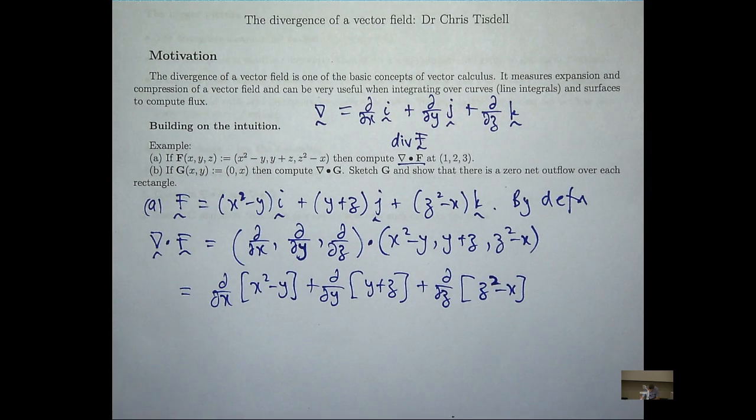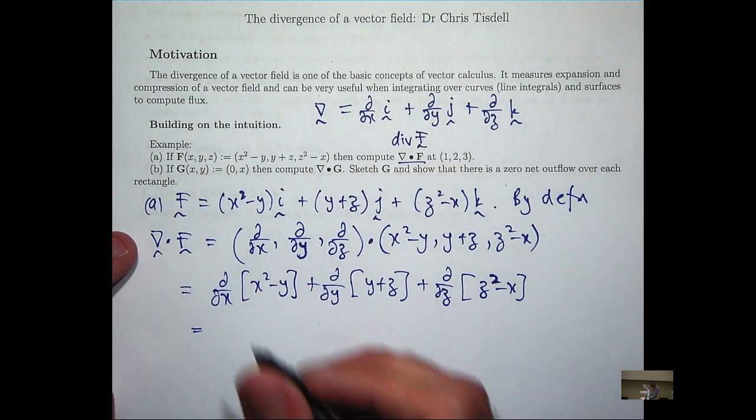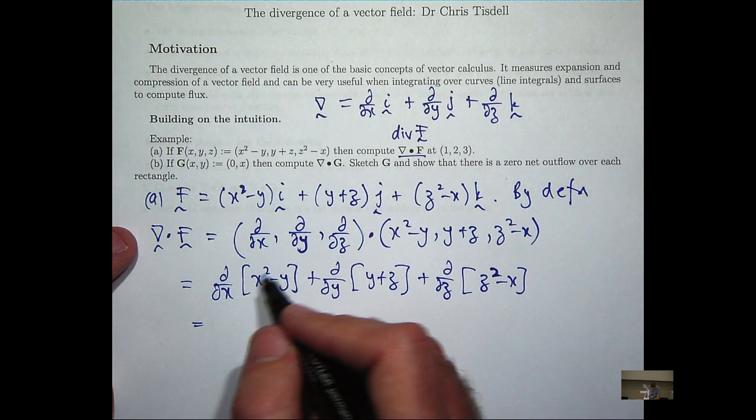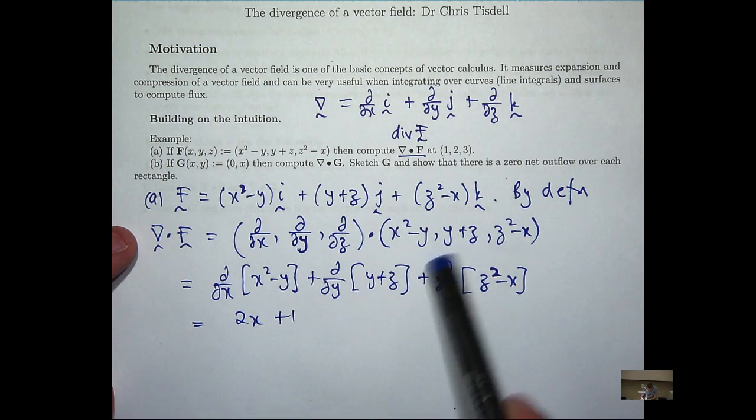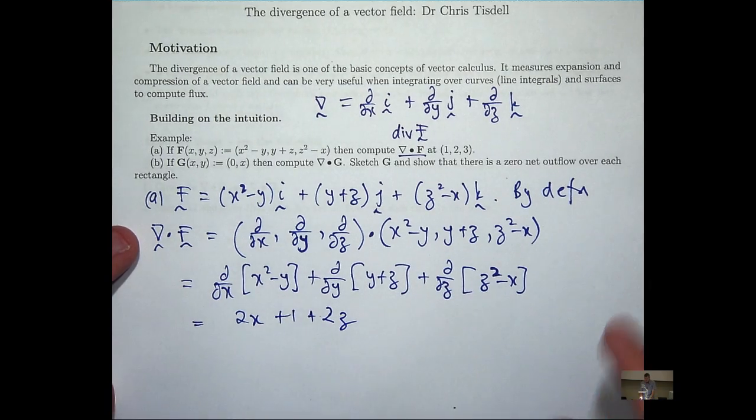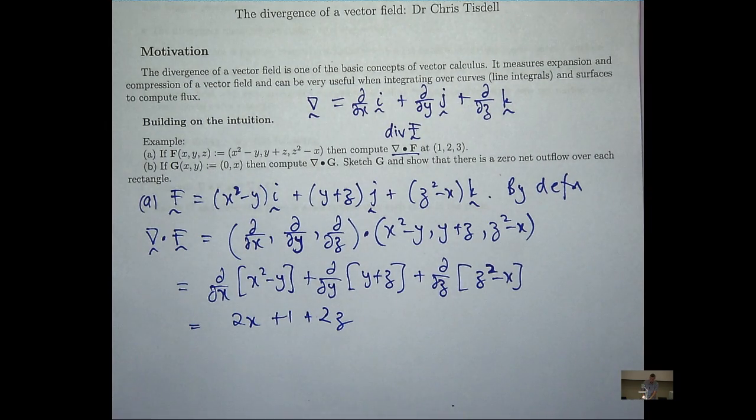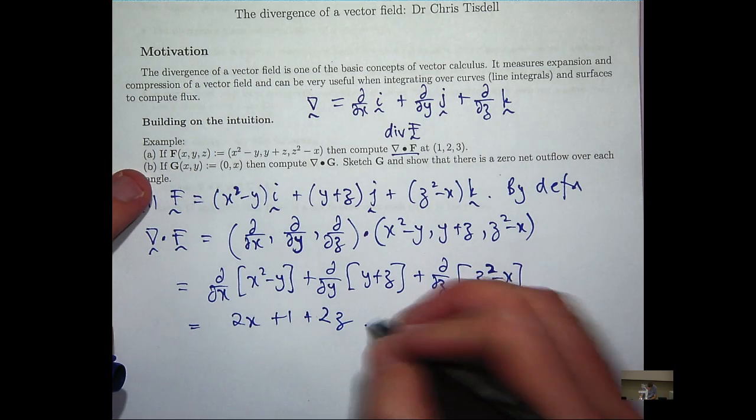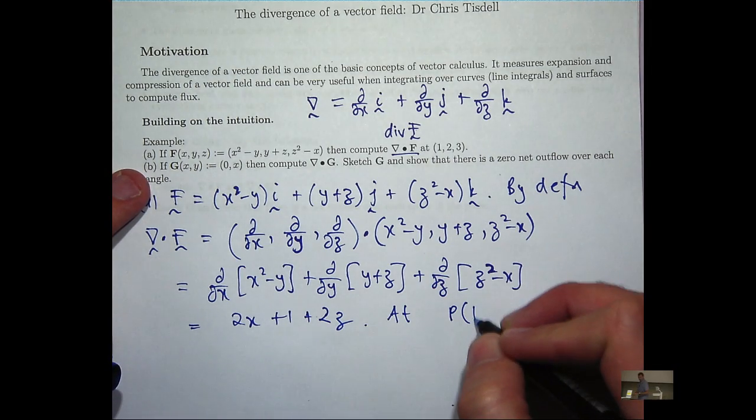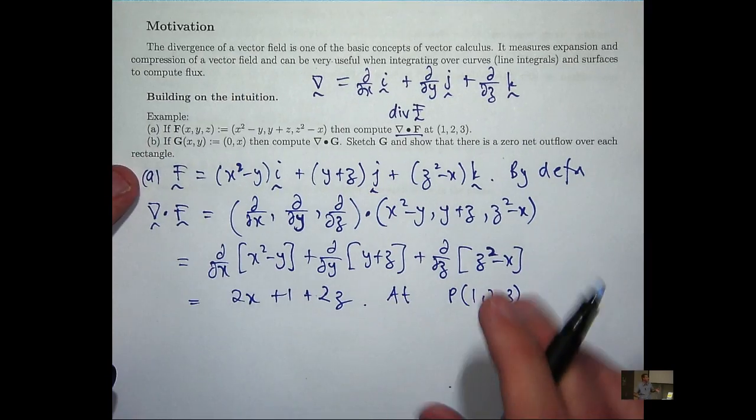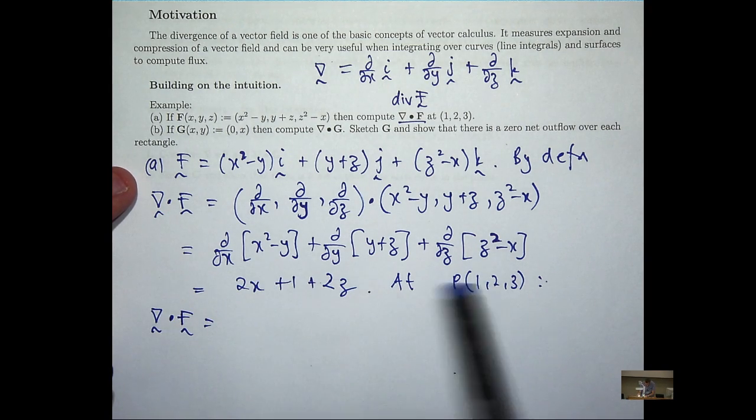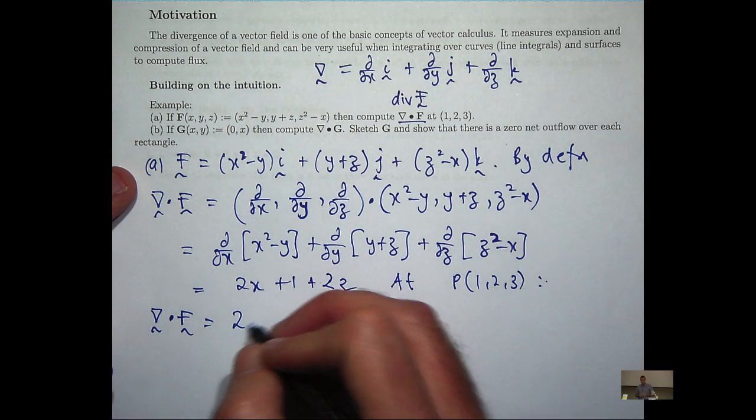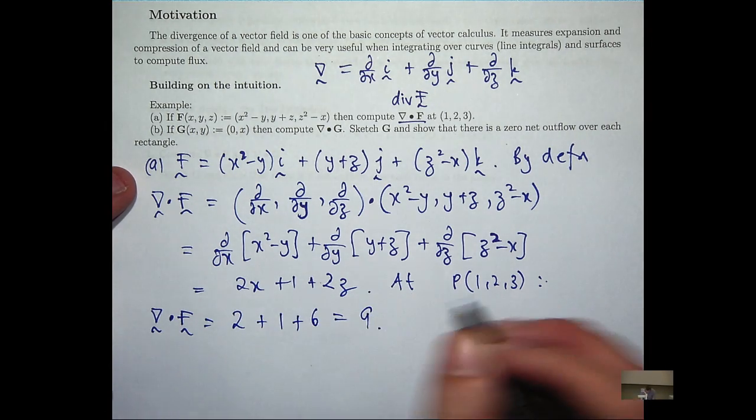So now it's just a matter of partially differentiating. So ∂/∂x of this is going to be something like 2x because we hold everything fixed except for the x's and differentiate. Here it's going to be 1 and over here it's going to be something like 2z. So, at our point of interest, let's calculate the value of this. So let's call the point (1, 2, 3) say p. So I just replace x with 1, y with 2 and z with 3. So I'm going to get 2 + 1 + 6 = 9.